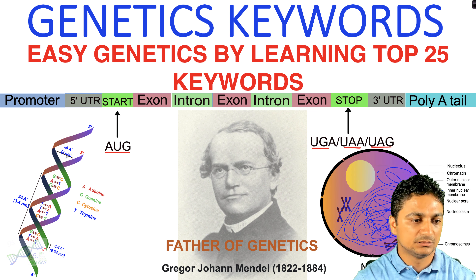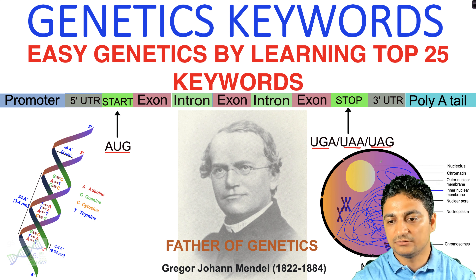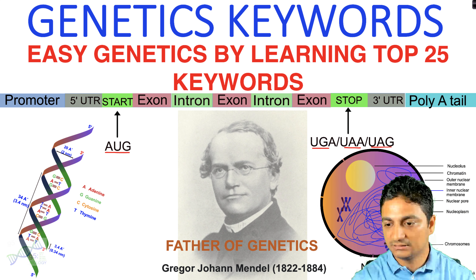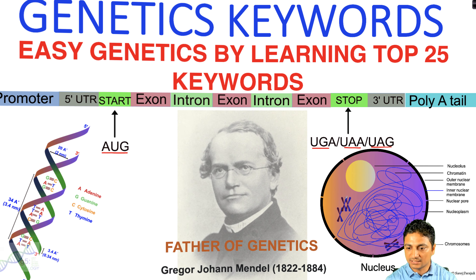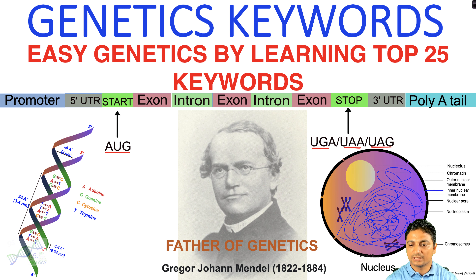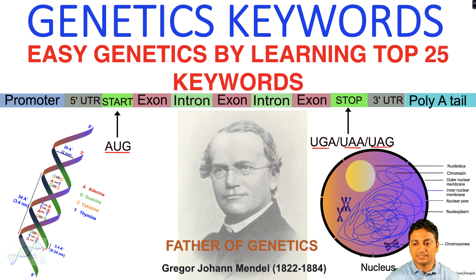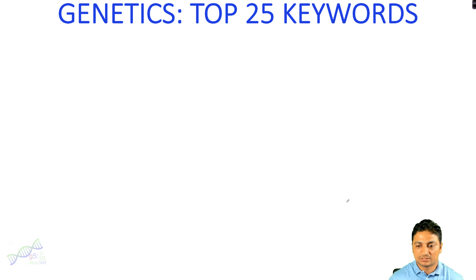On the left is a double stranded DNA model and on the right we have the nucleus. In the nucleus we can see the chromatin fibers and these are the chromosomes where genes are located. Let's move ahead and talk about the top 25 keywords in genetics that will help us understand the whole genetics lecture.